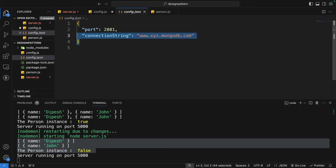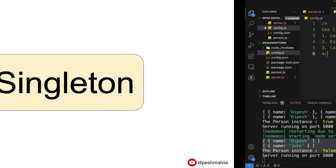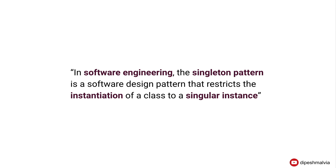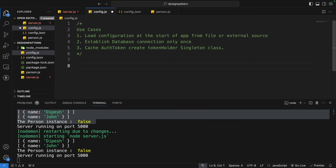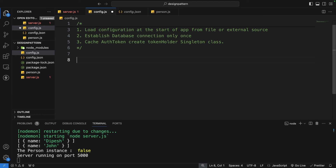We'll implement the configuration loading use case. First, let's understand what a singleton is: in software engineering, a singleton pattern restricts the instantiation of a class to a single instance — we cannot have multiple instances of the same class. When implementing a singleton, we need two things: a hidden constructor, and a public static method called getInstance to access the singleton instance.